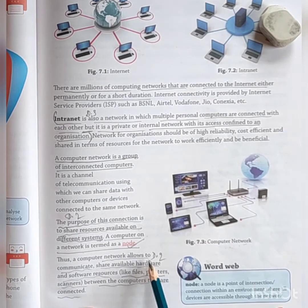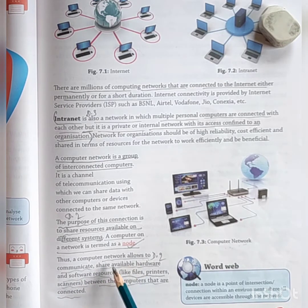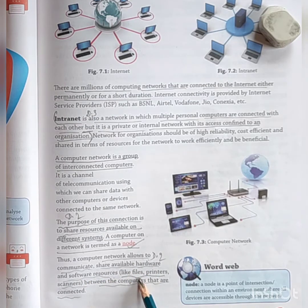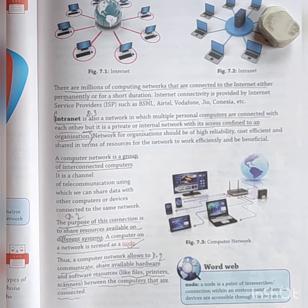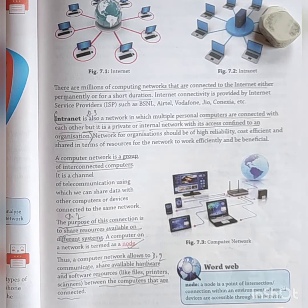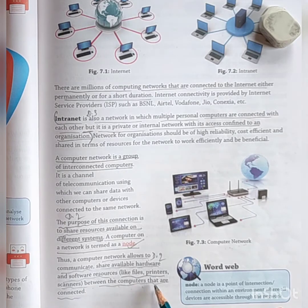A computer network allows computers to communicate and share available hardware and software resources, for example files, printers, and scanners. We can use one printer through the sharing process for multiple computers, which reduces cost. It can share available hardware and software resources like files, printers, and scanners between the computers that are connected.